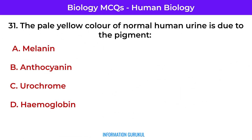The pale yellow color of normal human urine is due to which pigment? Urochrome.